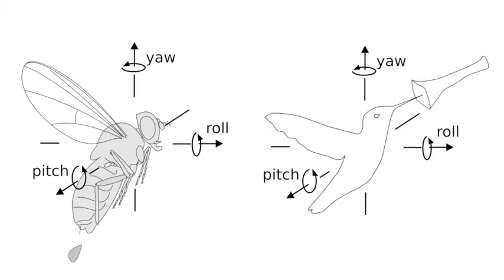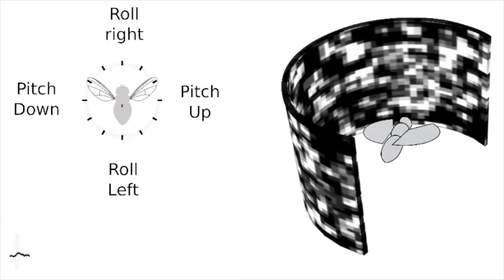Because flies, like any aircraft, can rotate around three different body axes called yaw, pitch, and roll, we varied the direction of our patterns and measured the response of each muscle to these changing directions.